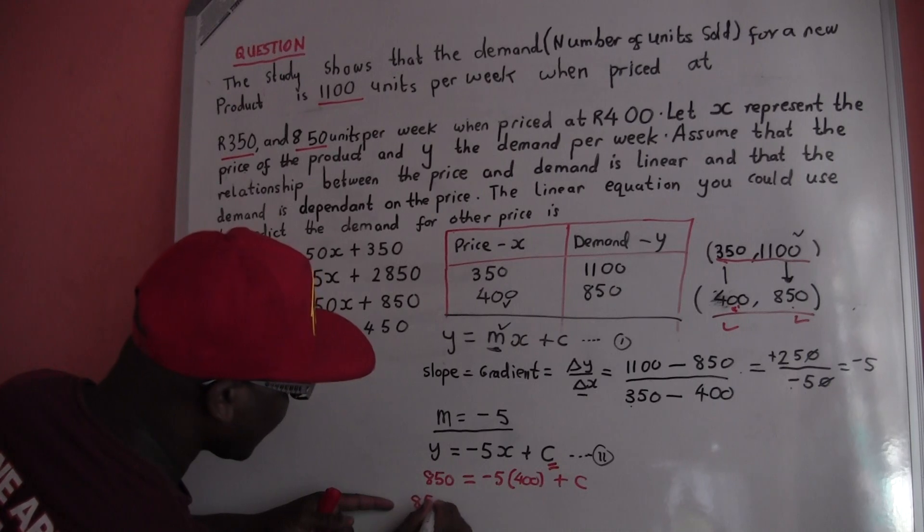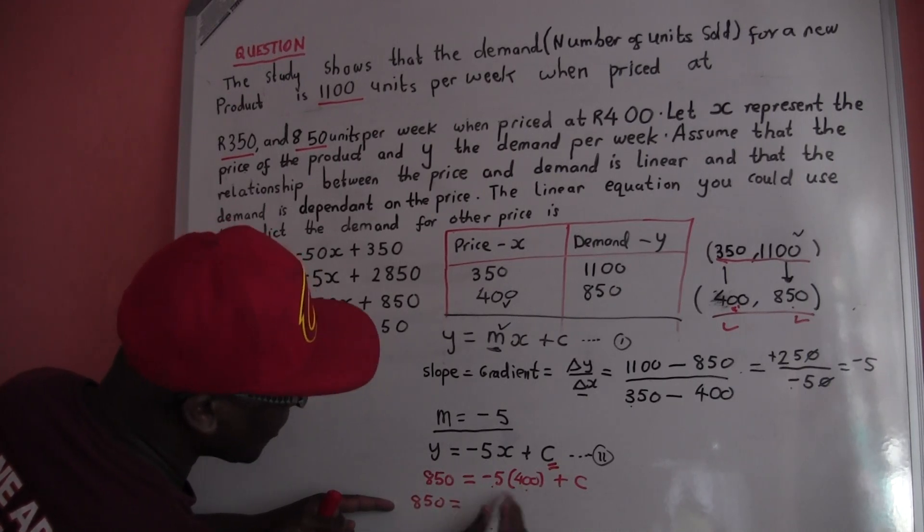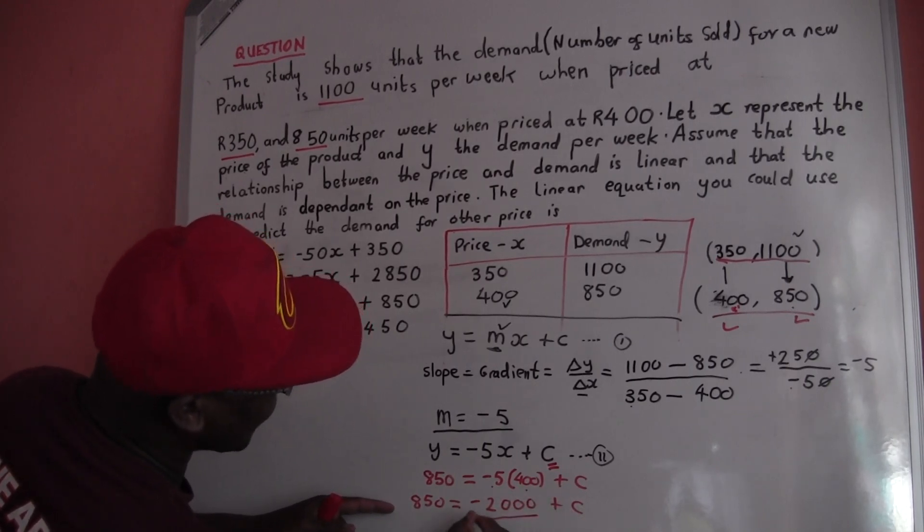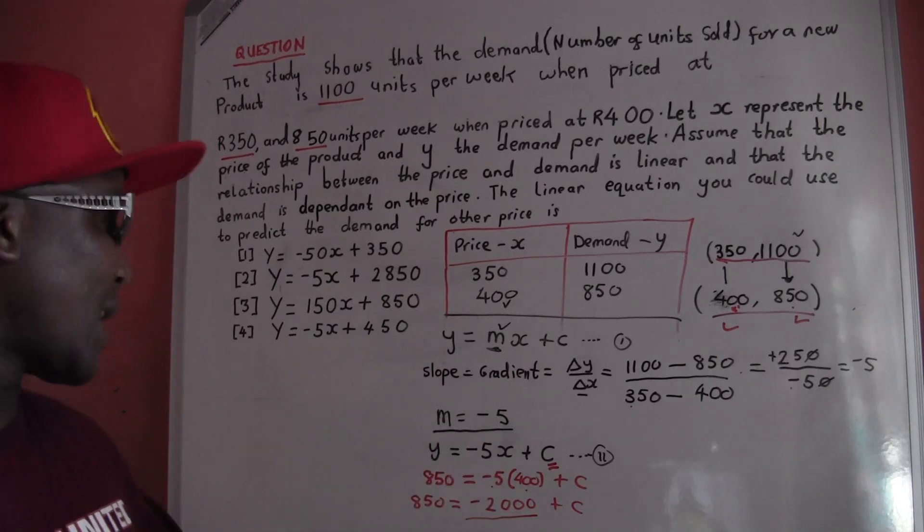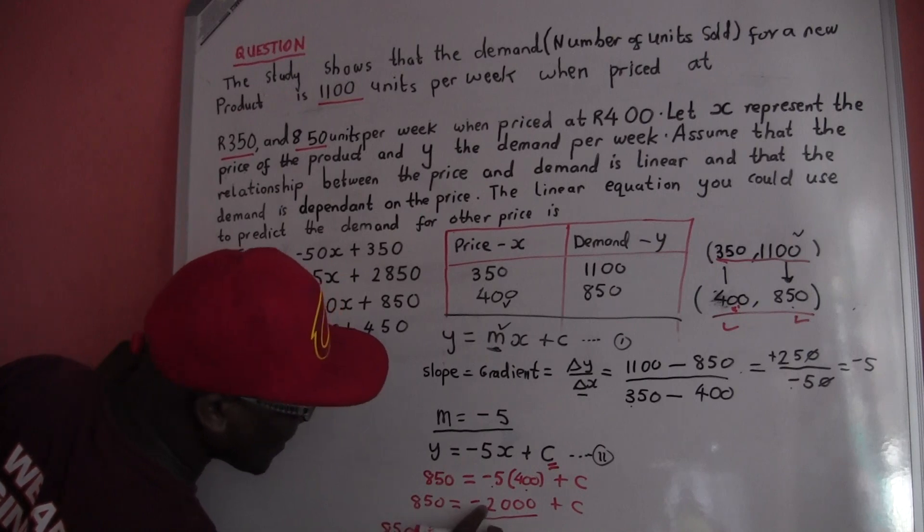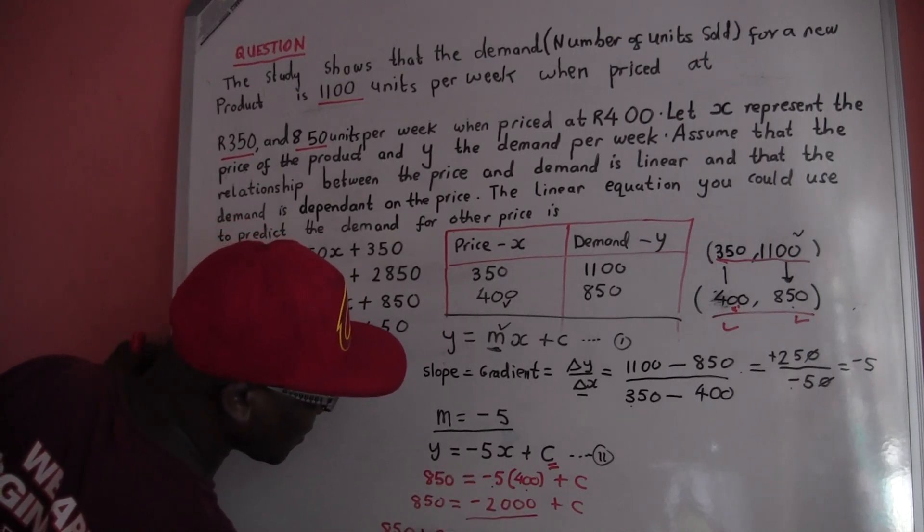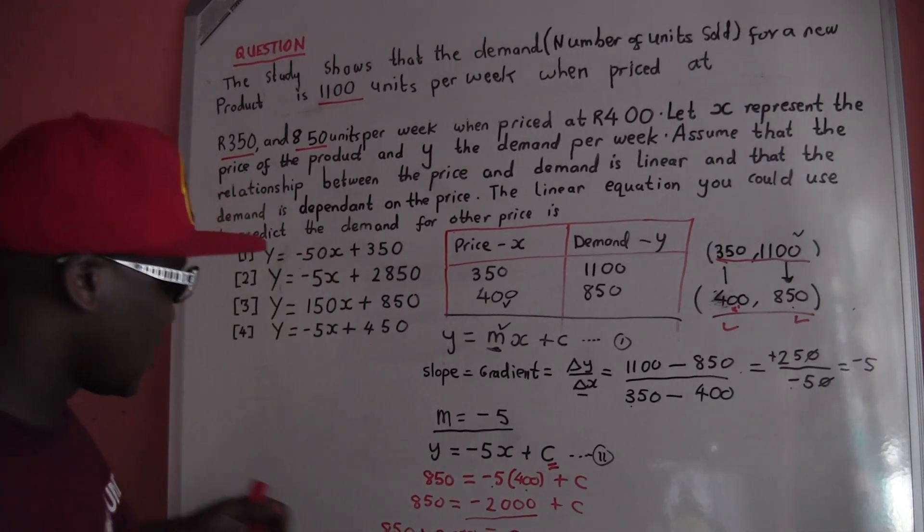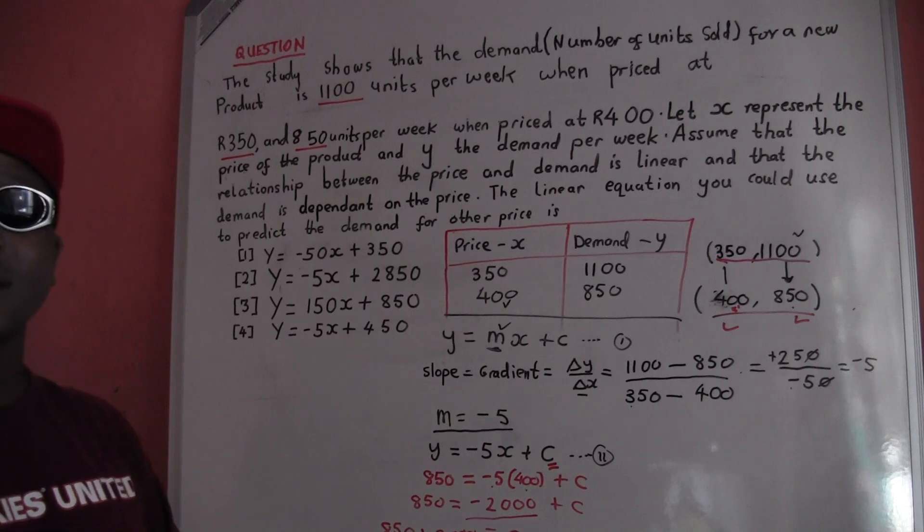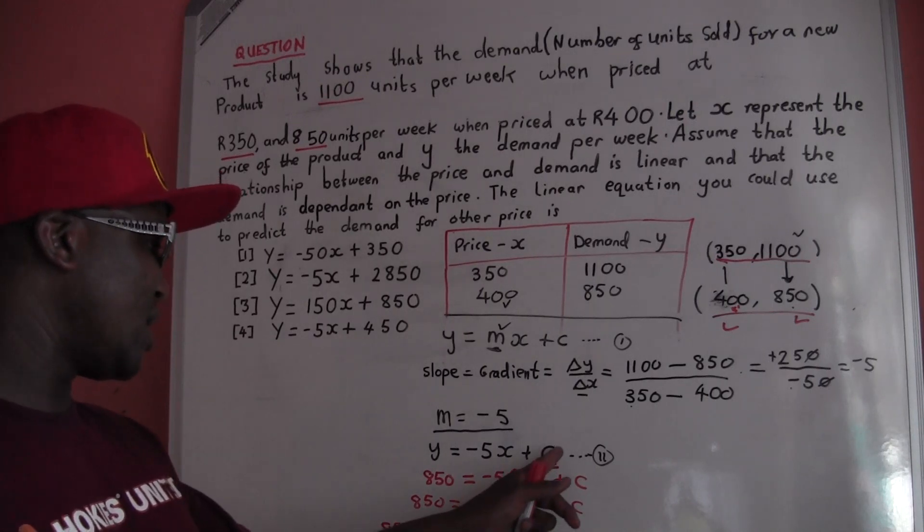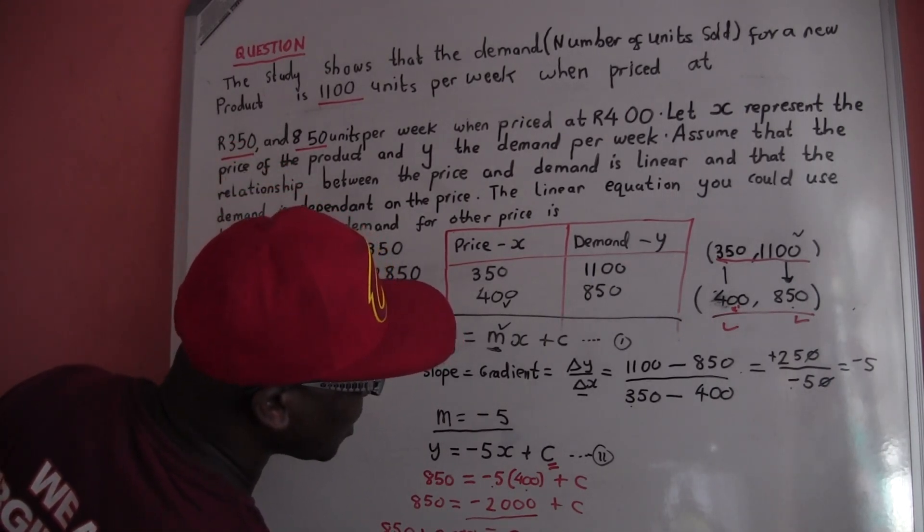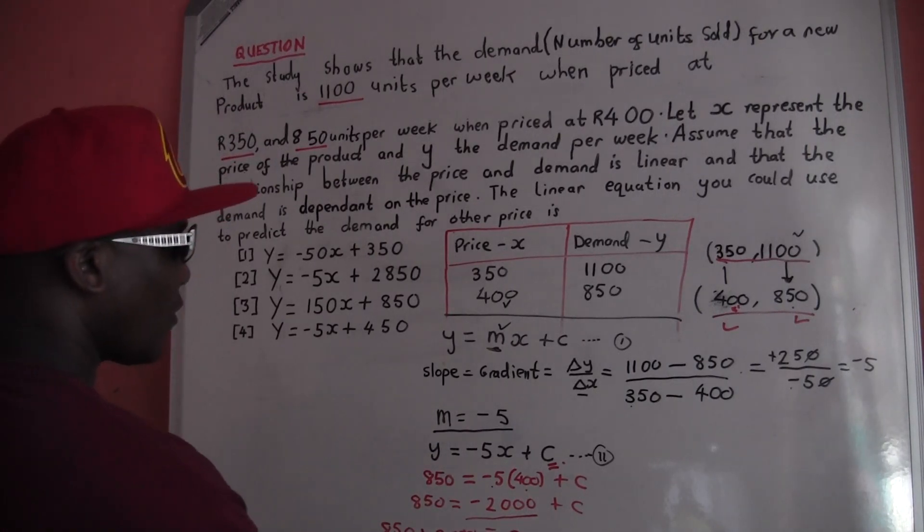So what I'm going to do here: 850 equals negative 5 times 400 equals negative 2000 plus C. So this is negative, so it has to go over. This is a number, so it's got to go to the other number. So 850, when this negative goes over to a number it's going to become positive, equals C. So 850 plus 2000, 2850. So it's going to give us 2850 is the value of C. So we got C. So then what happens? I'm going to have to take this and put it in here, in equation 2. So I'm going to say sub into equation 2 because all I wanted is C for now.